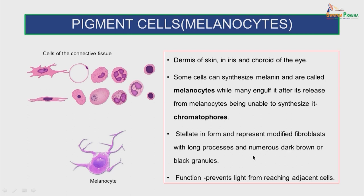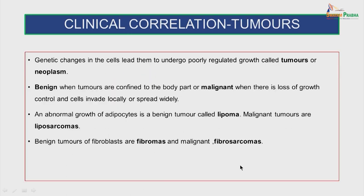Clinical correlation: genetic changes in cells lead them to undergo poorly regulated growth called tumors or neoplasms — benign when confined to the body part, or malignant when there is loss of growth control and cells invade locally or spread widely. An abnormal growth of adipocytes in a benign tumor is called a lipoma; malignant tumors are liposarcomas. Benign tumors of the fibroblasts are fibromas and malignant ones are called fibrosarcomas.